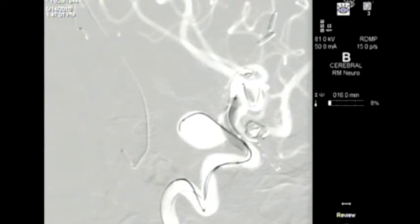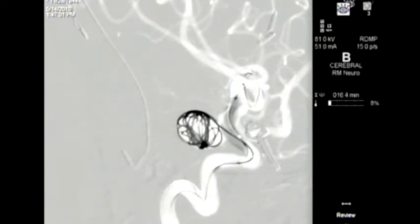Here you can see the first coil being delivered through the microcatheter into the dome of the aneurysm. This coil is made out of pure platinum. As it comes out of the microcatheter, it takes on a three-dimensional form, in essence forming a three-dimensional basket and framing structure within the aneurysm fundus.